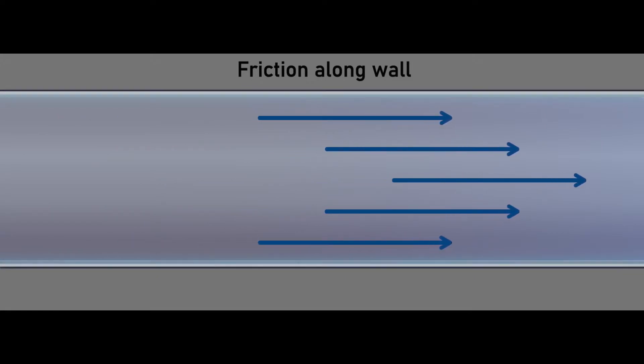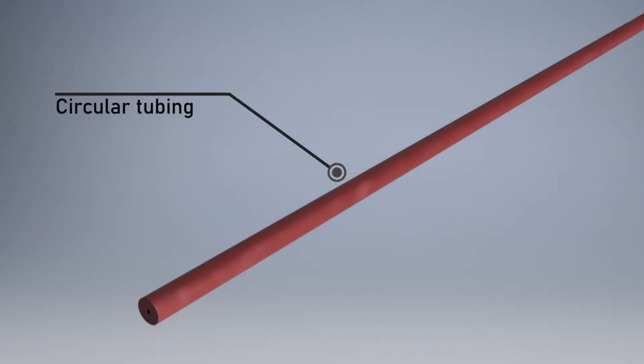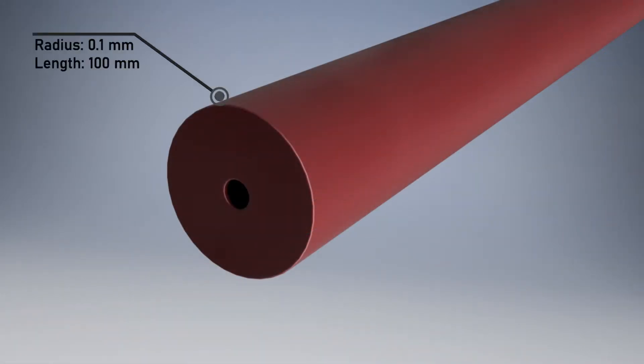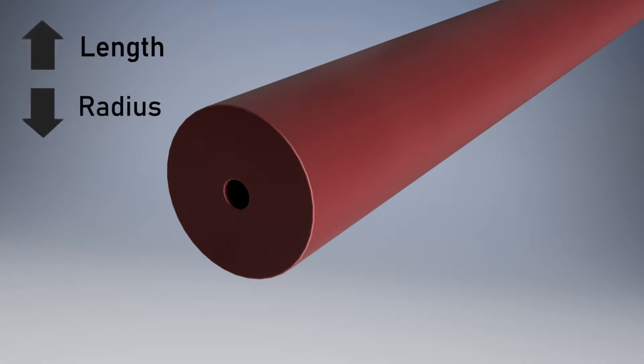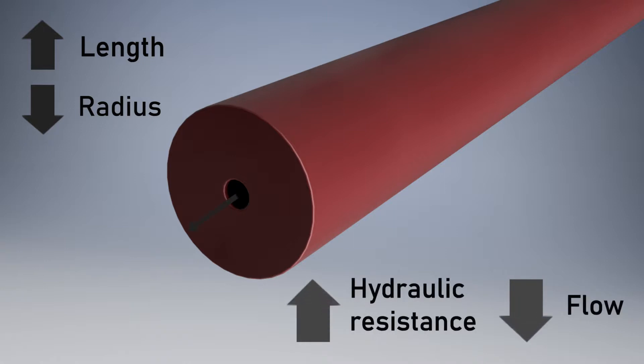To better demonstrate how the length and the measurements of our tube affect the hydraulic resistance, we'll go over the following examples. First, let's consider a long tube and a small radius. Having a higher length and a small radius will result in a lower flow due to higher hydraulic resistance.